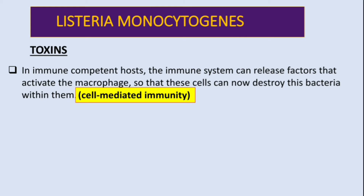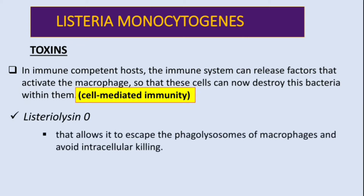Now let's talk about the toxins. The first one is listeriolysin O, which is more like streptolysin O. This toxin allows the bacteria to escape phagolysosomes of macrophages and avoid intracellular killing.